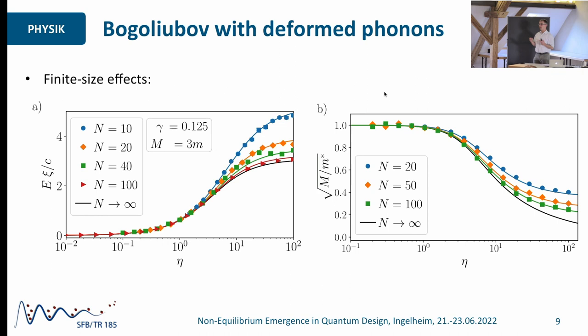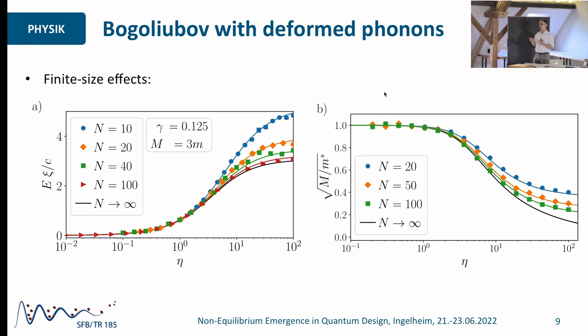So the bottom line is that all these properties of the Polaron can very nicely be described already on the level of a mean field theory, provided you make the right mean field theory — expanding the system around the proper solution.